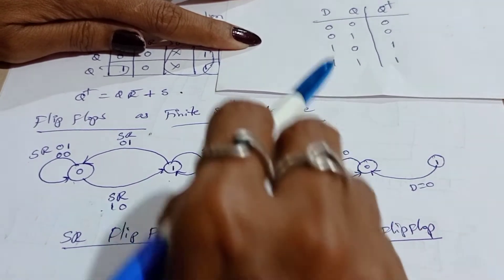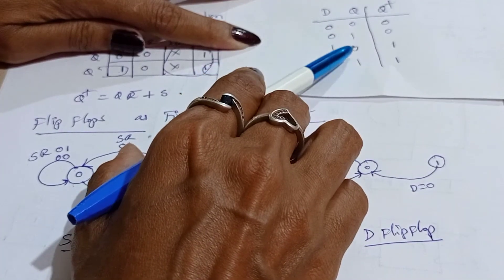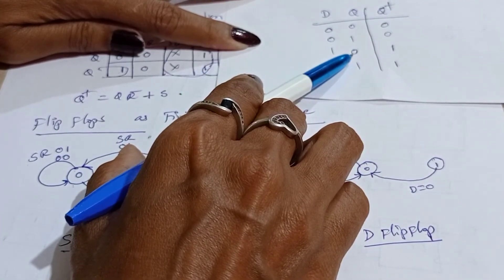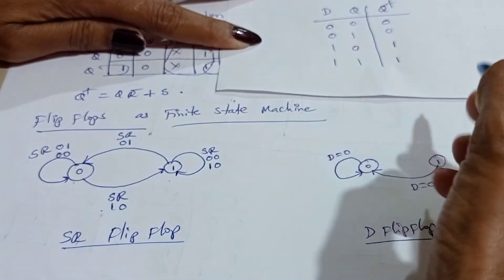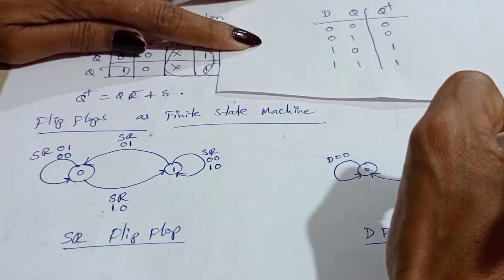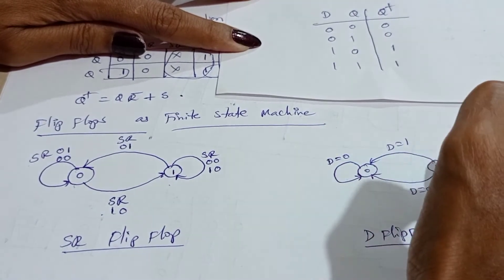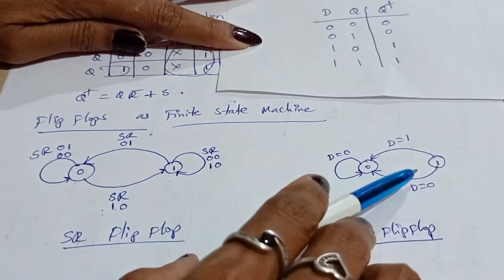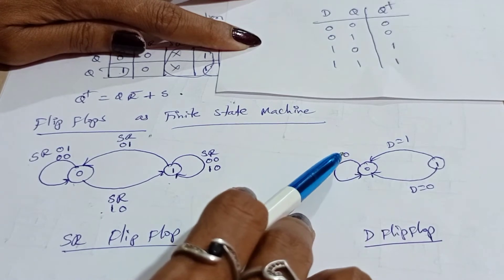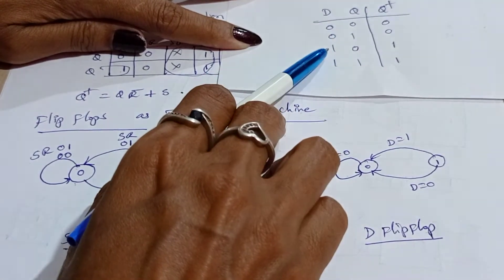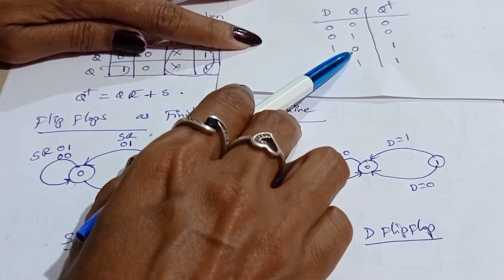When D is equal to 1, the present state is 0 and it is changing to the next state 1. When D is 1, it is changing from state 0 to state 1.